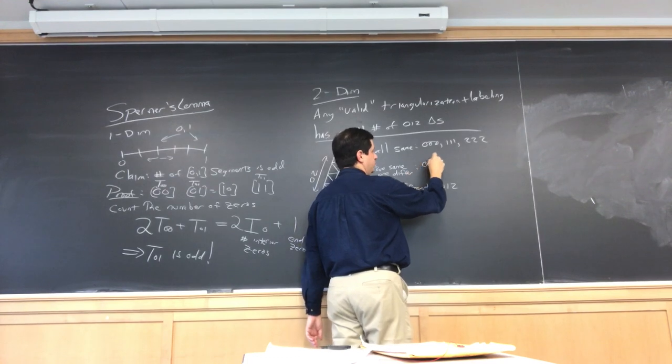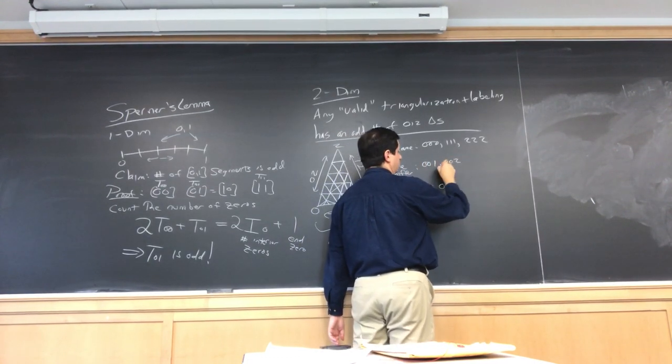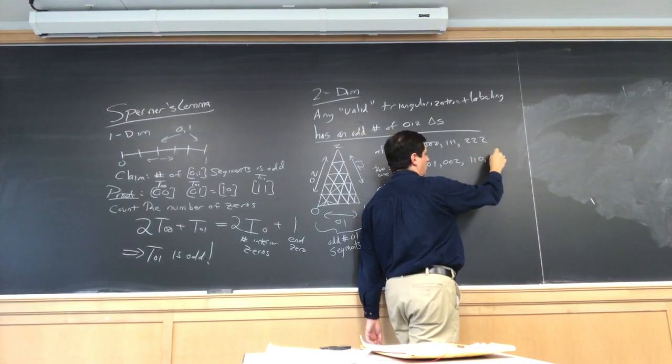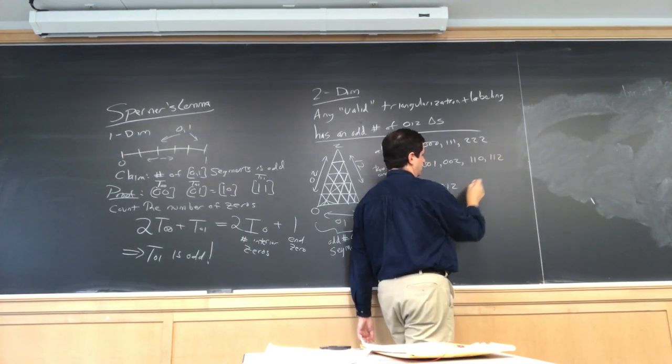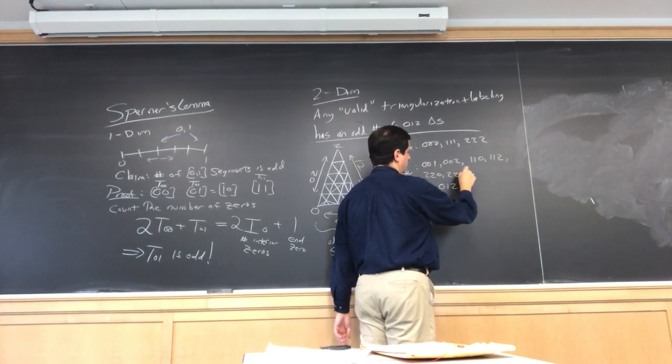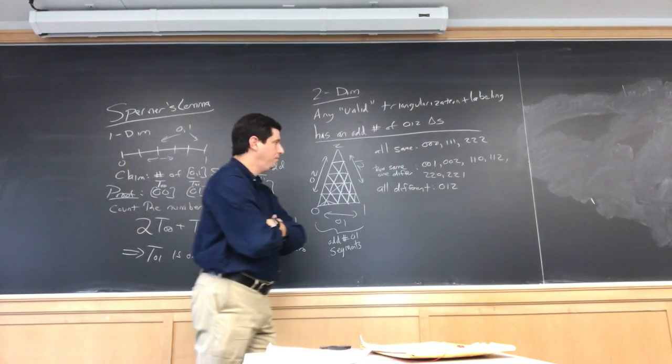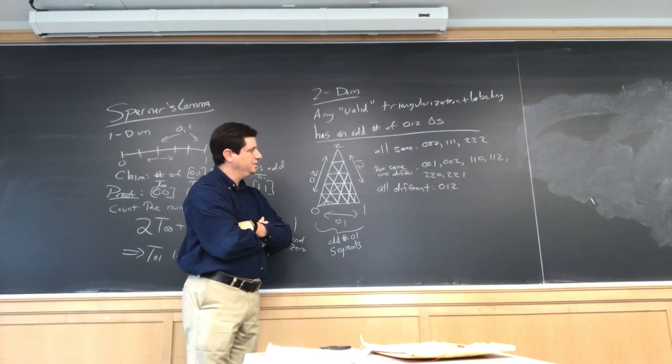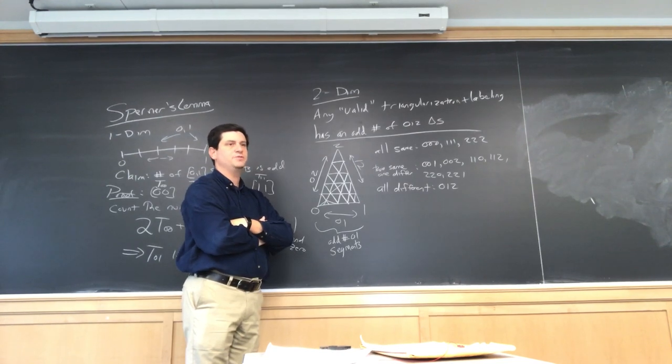So, we could do 0, 0, 1, 0, 0, 2. We could do 1, 1, 0, 1, 1, 2. Right? And then, 2, 2, 0, 2, 2, 1. And I believe that's it. So, 1, 2, 3, 4, 5, 6, 7, 8, 9, 10. So, it looks like there's 10 different types of triangles.